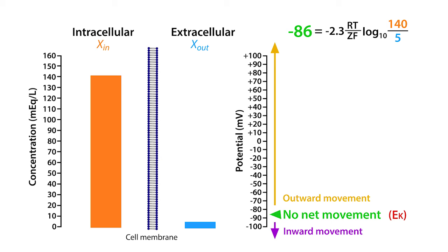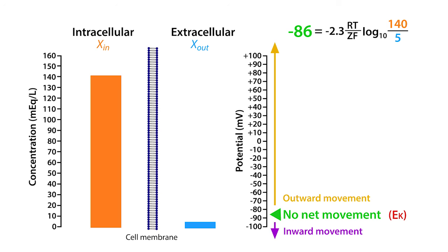Likewise, potassium ions will move into the cell against their concentration gradient when the electrical potential is more negative than the equilibrium potential. From this demonstration, we hope that you're able to identify the relationship between the equilibrium potential and the intracellular and extracellular concentrations.